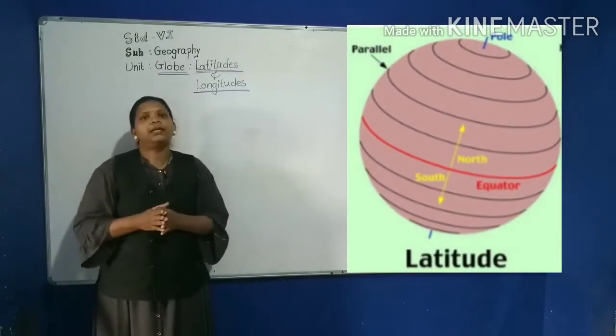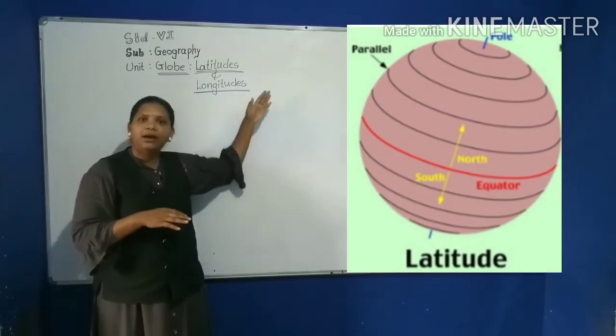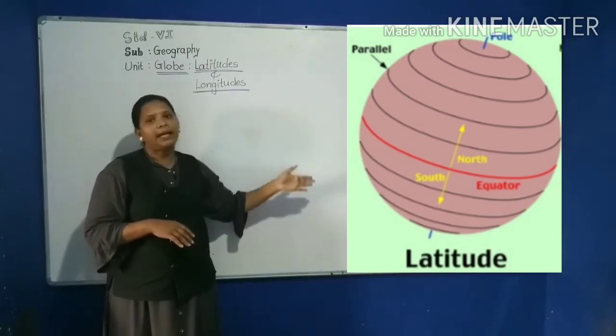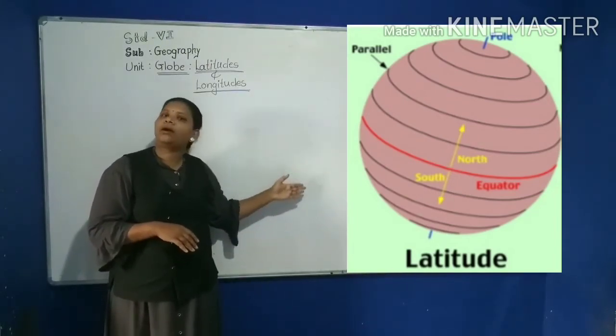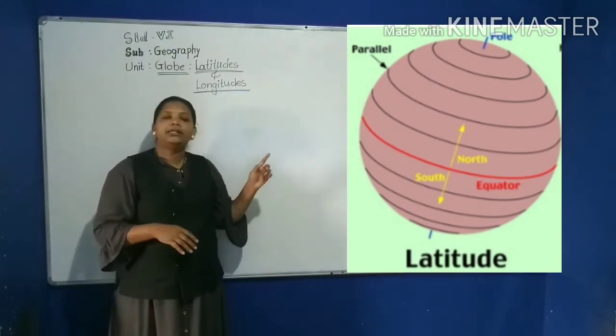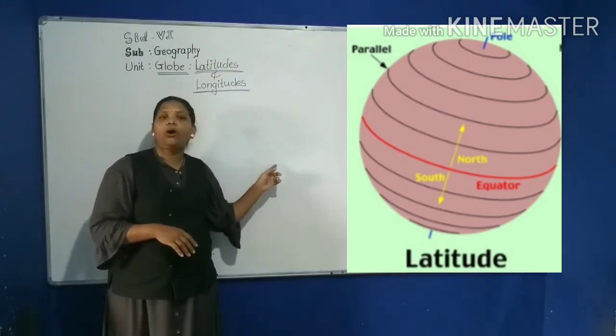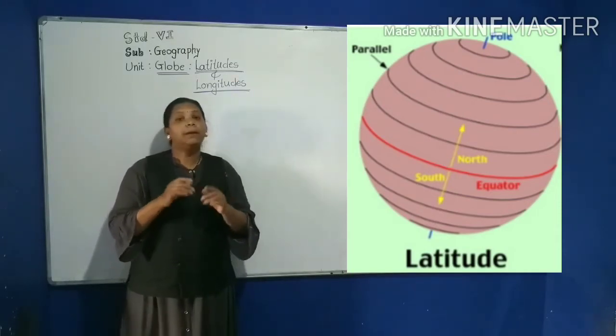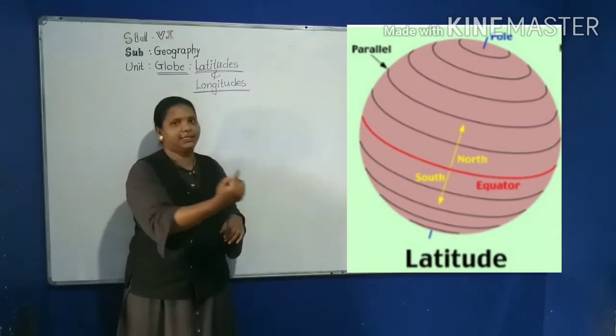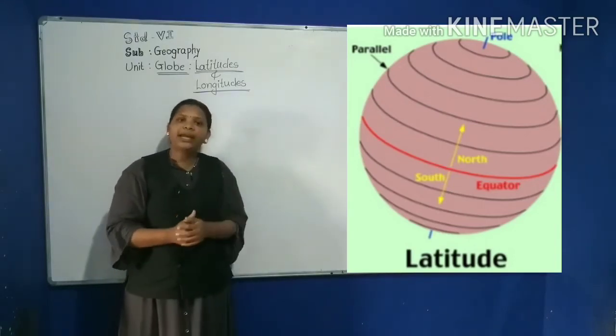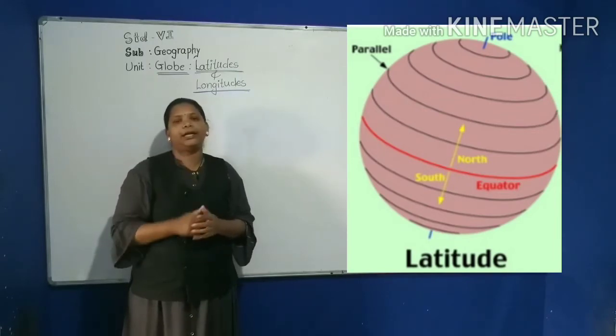All the parallels north of the equator are called the north latitudes. Similarly, all the parallels south of the equator are called south latitudes. All parallels or latitudes are in the form of complete circles.